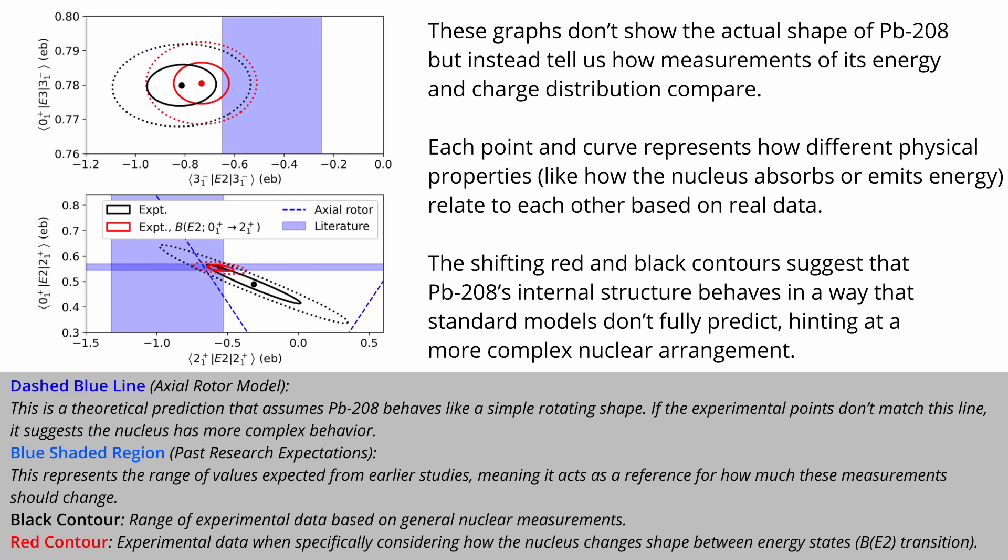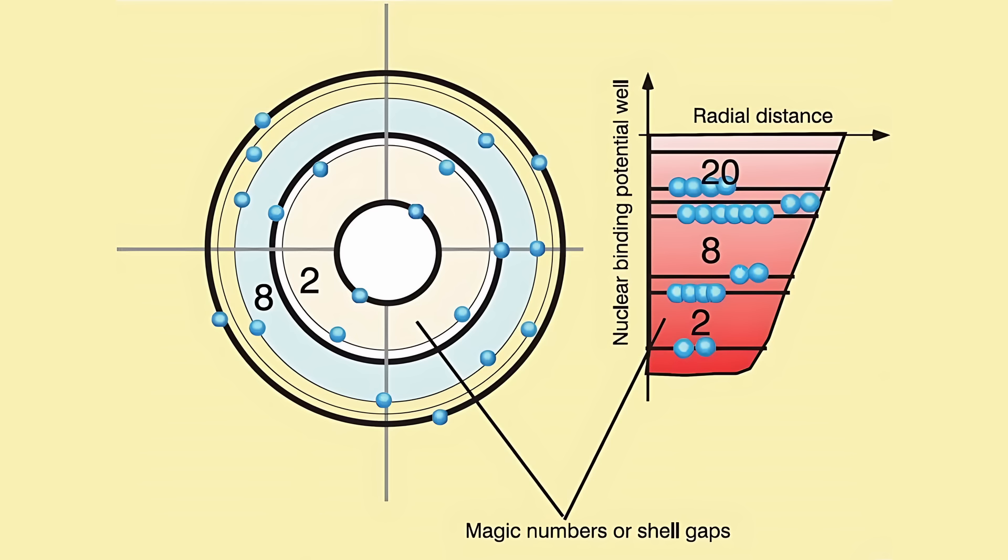The findings from this study suggest that even nuclei considered to be rigidly spherical can exhibit deformation, hinting at an underlying spatial organization, rather than a purely statistical distribution of nucleons. In the standard nuclear shell model, magic numbers emerge because nucleons are thought to fill discrete energy levels, analogous to electron orbitals. However, while this model explains energy states, it does not provide a clear three-dimensional spatial arrangement of nucleons.